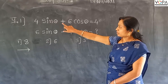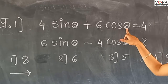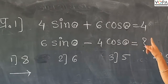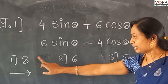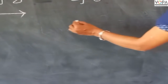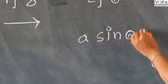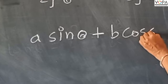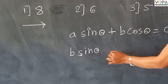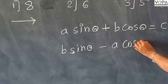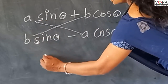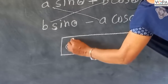The question involves 4 sin theta plus 6 cos theta equal to 4, and 6 sin theta minus 4 cos theta equal to 4. So this is the equation of 4 sin theta plus 6 cos theta equal to 4, and 6 sin theta equal to 4. Another equation is 2 sin theta minus a cos theta equal to 5, and 4 sin theta equal to 5 plus 5 sin theta minus a cos theta equal to 4.